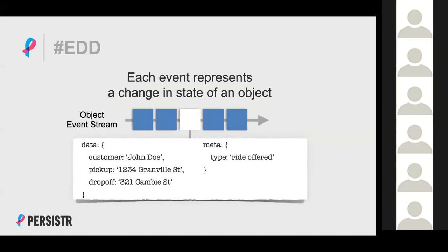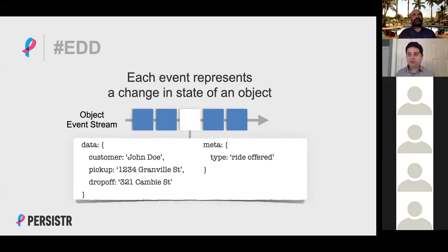Events are facts about what happened in the system. Each event is essentially a change in state of an object. This is where the concept of semantic events comes into play — when you modify an SQL table, you can call that an event, a change in state, but that's not really what we mean. What we really mean is something that's meaningful to the product, meaningful to the business, meaningful to your domain. For example, when a ride gets offered to a driver, you want to display information: who's the customer, where to pick them up, where they want to be dropped off, how much money you'll make. That's an event meaningful to the product — that's a semantic event. It's not a technical thing; it's a product-level thing.